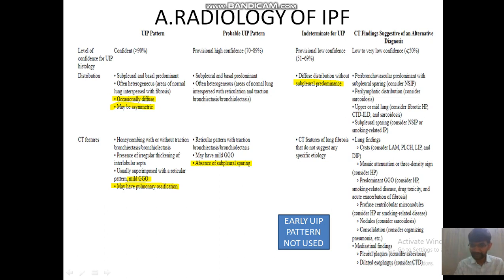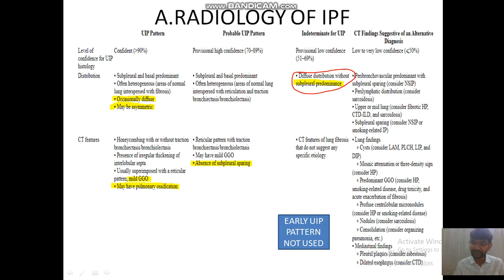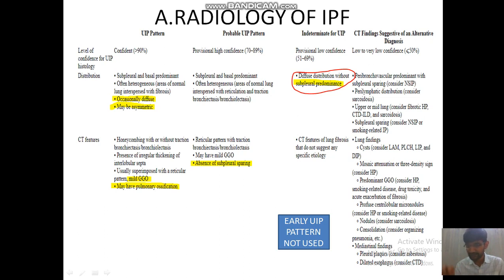Coming to the probable UIP pattern — same: subpleural, basal predominant, often heterogeneous reticular opacities with traction bronchiectasis or bronchiolectasis. An important addition is the absence of subpleural sparing. For indeterminate UIP, the important change is it need not be subpleural predominant — diffuse distribution without subpleural predominance is now accepted, whereas in 2018 it required subpleural and basal predominance. Also, the term 'early UIP pattern' used under indeterminate for UIP in 2018 is no longer used. Alternative diagnosis remains the same.